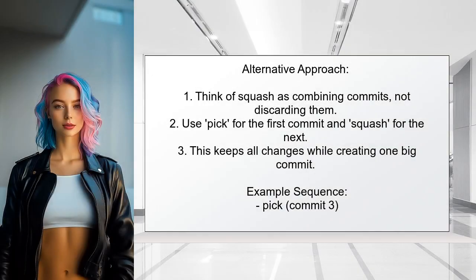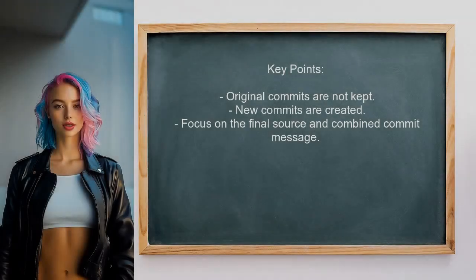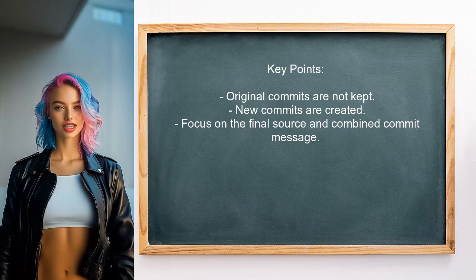Another approach suggests that instead of thinking about squashing as throwing away commits, consider it as combining them. You want to keep the contents of all your commits, just not as separate entries. The sequence of pick and squash means you will keep all the changes while creating one big commit. After the rebase, you won't keep the original commits — instead, you'll create new ones, with the focus on the final combined commit message.